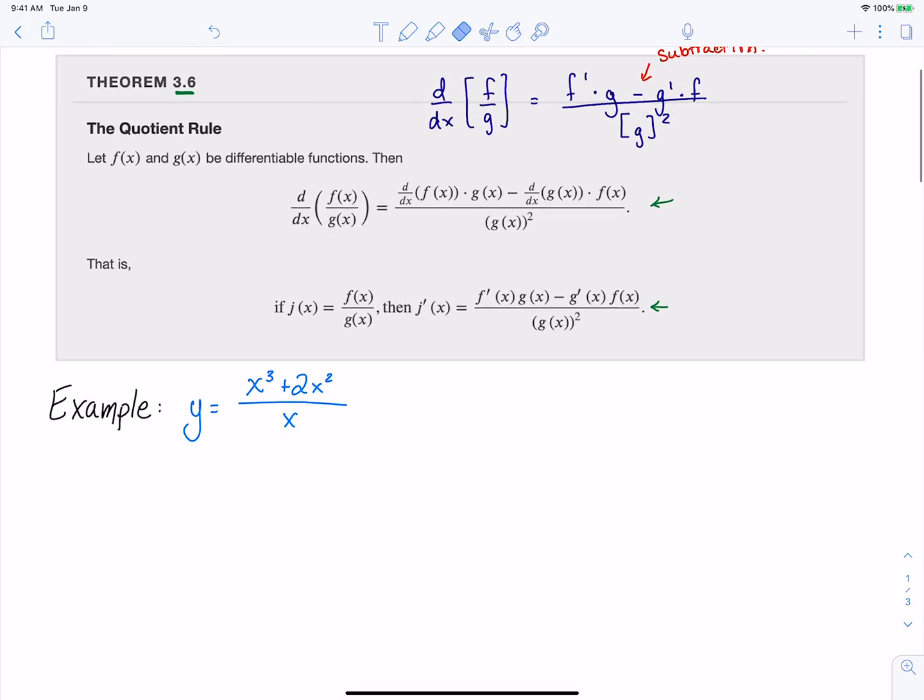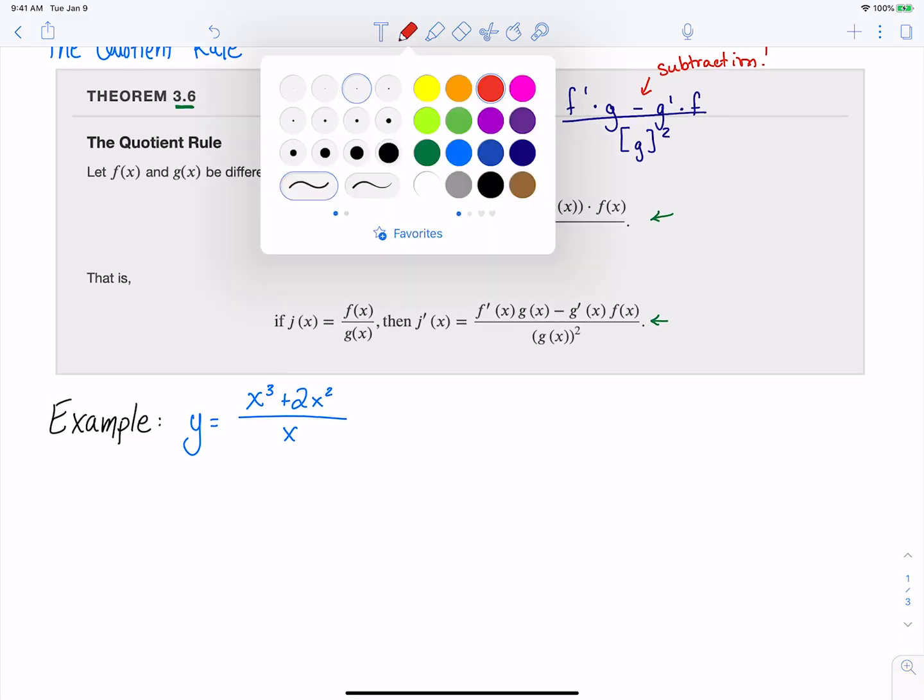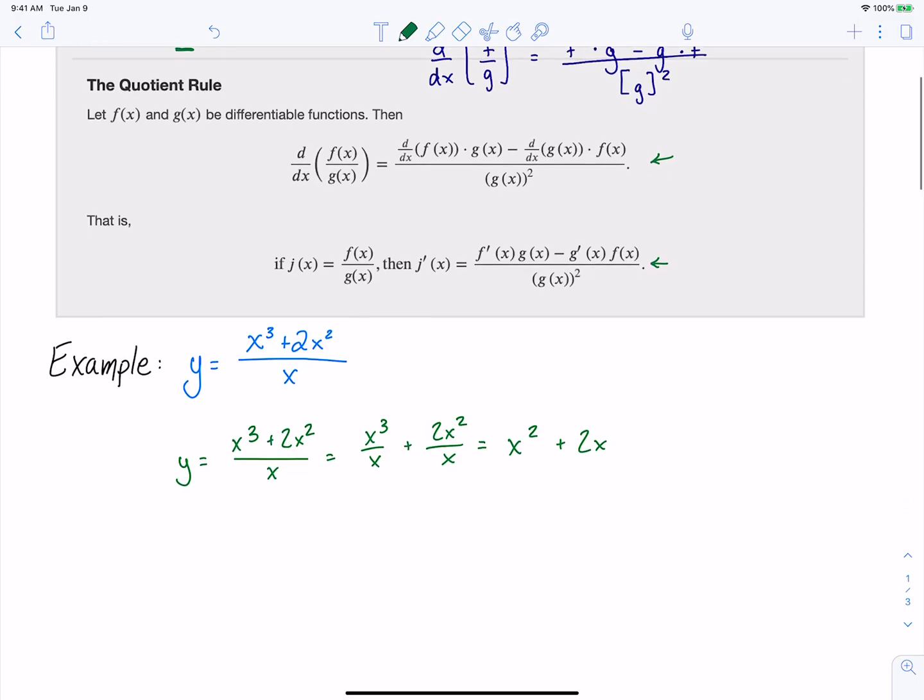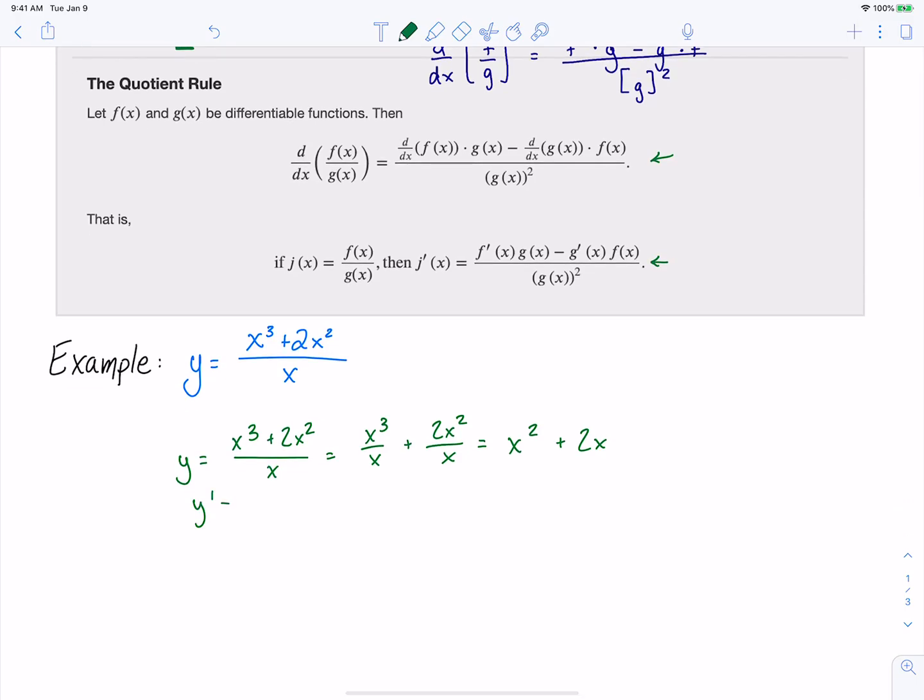So let's take a look at an example that we don't actually need the quotient rule to do and make sure we can understand how this works. When I'm saying we don't need the quotient rule for this fraction here, what we could do is split up these two terms with a denominator of x and then we can simplify each of these. And we get x squared plus 2x. And this function we can take the derivative of, we've done this many times before, we get 2x plus 2.